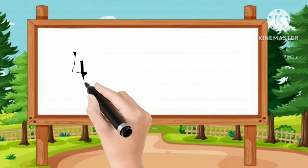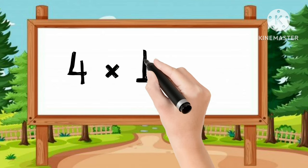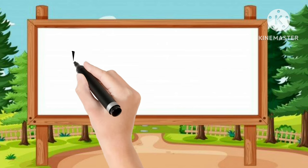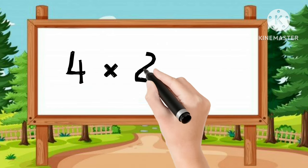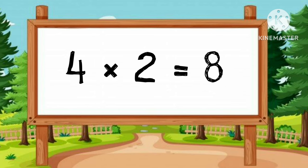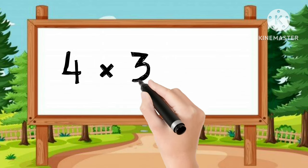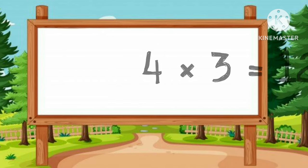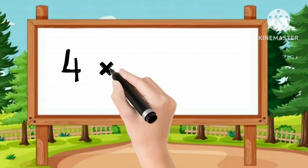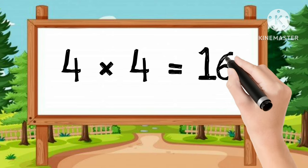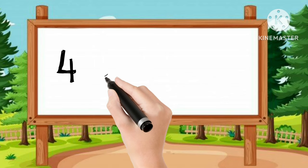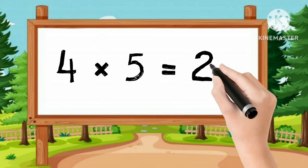Let's learn table of 4. 4-1s are 4. 4-2s are 8. 4-3s are 12. 4-4s are 16. 4-5s are 20.